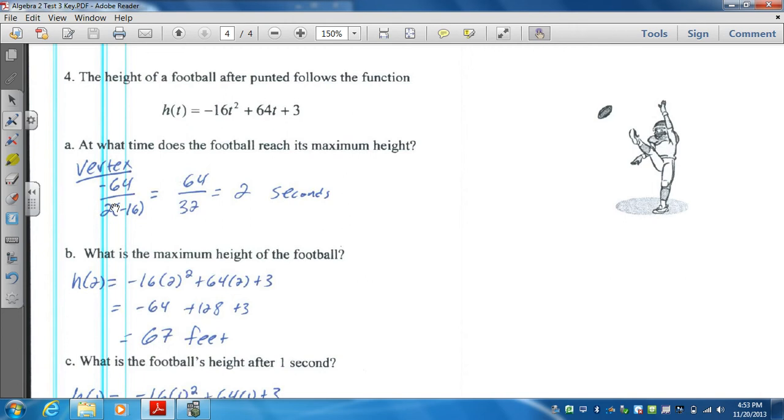So this is going to be negative b divided by 2a. The opposite of 64 is going to be negative 64 divided by 2 times a. a is negative 16. And then when you simplify this, it's 2 seconds.